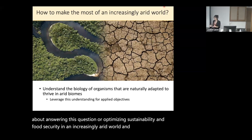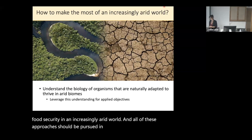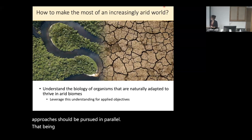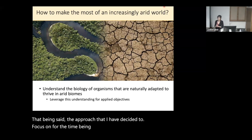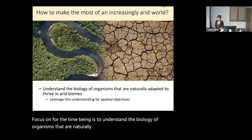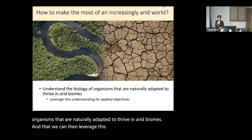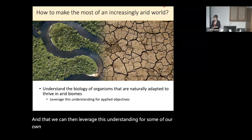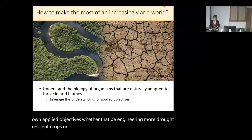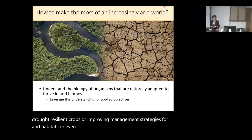All of these approaches should be pursued in parallel. The approach I've decided to focus on is to understand the biology of organisms that are naturally adapted to thrive in arid biomes, and then leverage this understanding for applied objectives — whether that be engineering more drought-resilient crops, improving management strategies for arid habitats, or even understanding how to preserve tissues in a dry state rather than in a frozen state.